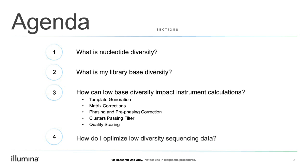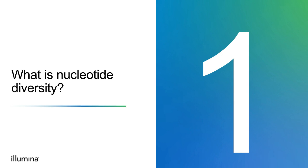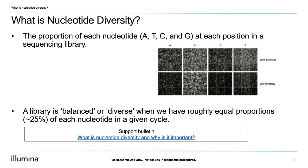To start, let's briefly cover what we mean when we say nucleotide diversity. Nucleotide diversity is the proportion of each nucleotide — A, T, C, and G — at each position in a sequencing library. A library is balanced or diverse when we have roughly equal proportions, approximately 25%, of each nucleotide in a given cycle. We'll discuss why that's important for run performance, data quality, and data yield.